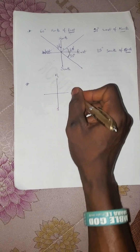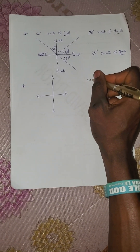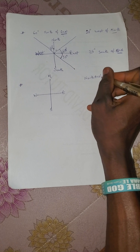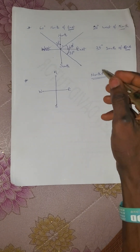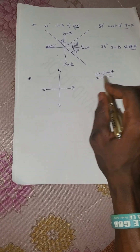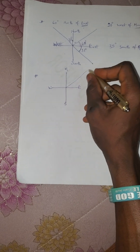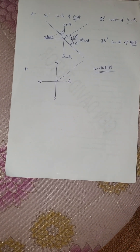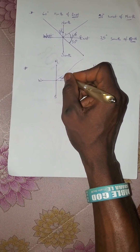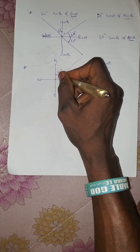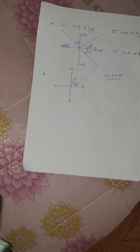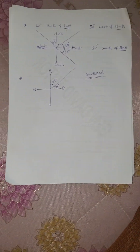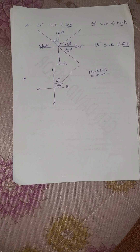The second case is when you have something like 'northeast.' When the two directions are written together without an angle given, the line is between north and east. Since no angle is specified, each side contains an equal angle — so both are 45 degrees each.